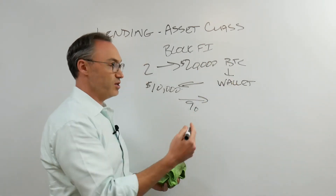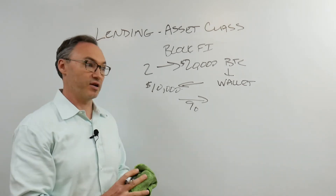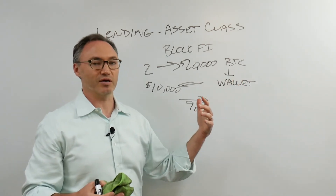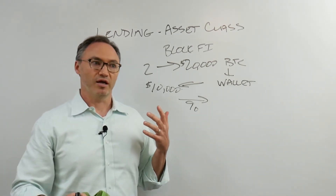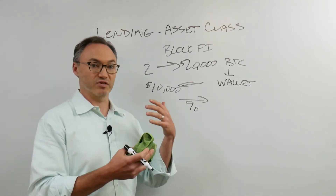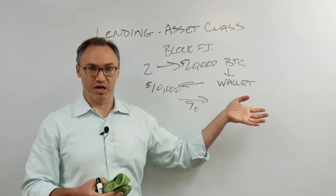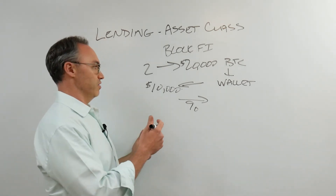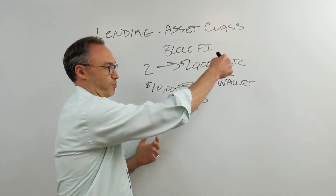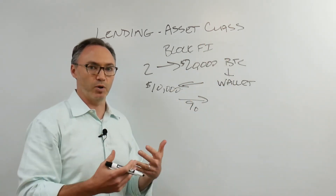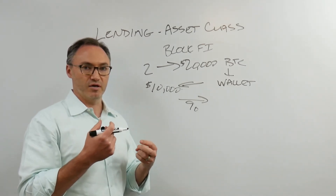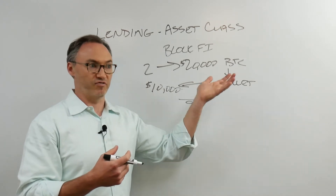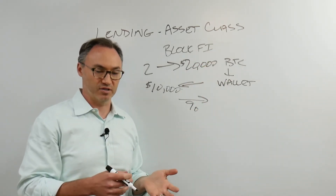If the price of Bitcoin falls significantly, they can liquidate me. But BlockFi is a real company — not just a protocol — so if Bitcoin dropped significantly (as it did in March), instead of liquidating everyone automatically, they'll actually make phone calls: can you get more capital in the account, put more Bitcoin in, or some dollars to shore it up? Same with Genesis and Drawbridge. And if Bitcoin goes up while I'm paying interest, I still get exposure to that upside. You can hold it as an asset you want to appreciate and borrow cash against it.